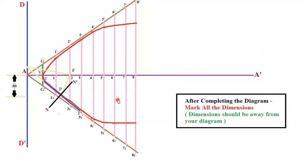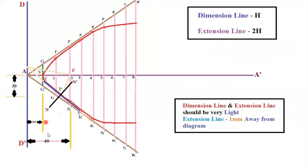After completing all the diagram, you have to mark the dimensions and your dimension should be outside or away from the diagram. Here dimensioning is, this line is called dimensioning line and this line is called extension line. Both the lines should be very light. Extension line should be 1mm away from the diagram. This distance between A and V is 20. You have to mark like this and your number should be vertically center of the dimensioning line. You have to break the line and write 40. This is the distance between directrix and focus.